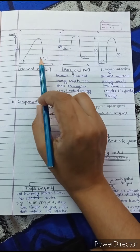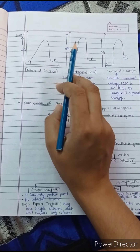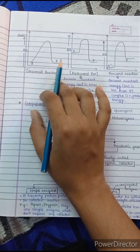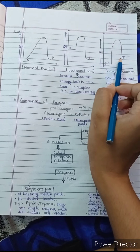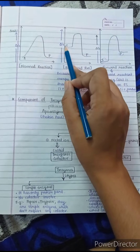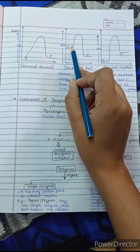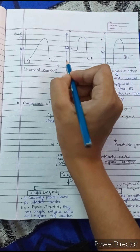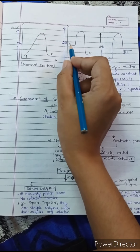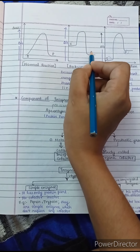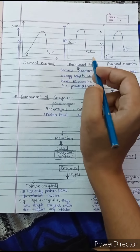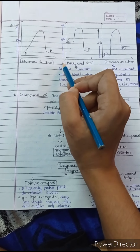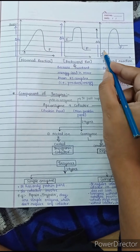Now we will see a question from the IES exam where we are given three graphs and must identify which shows a normal, which shows a backward, and which shows a forward reaction. The first graph is our normal reaction. In the second graph, if the product energy and the enzyme-substrate complex energy are less than the reactant energy, that is a backward or infeasible reaction.